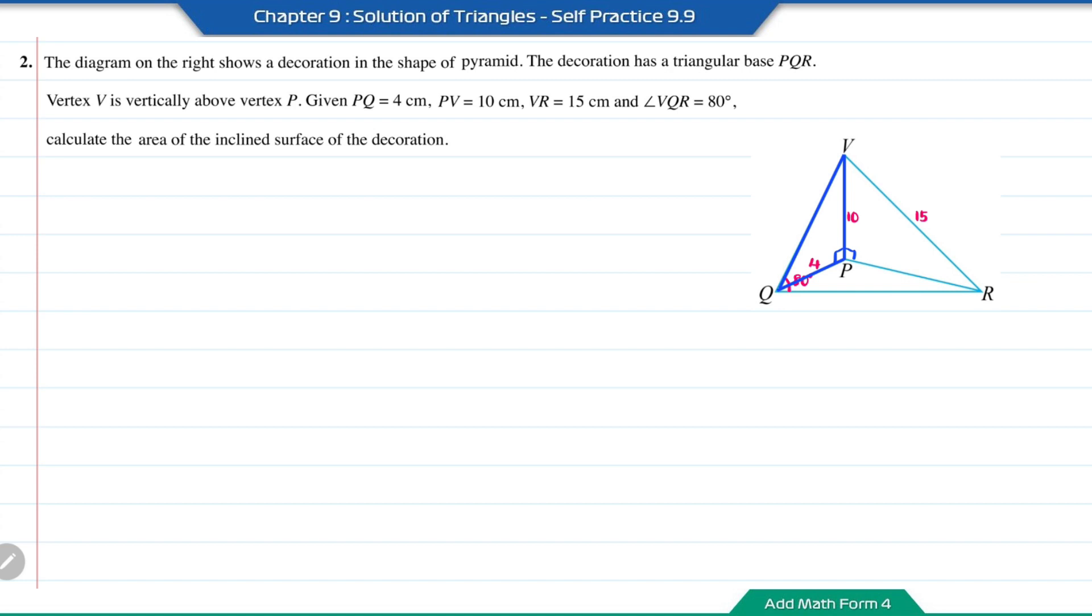As triangle VPQ is a right-angle triangle, we can find the length of VQ using the Pythagoras theorem, where VQ is the hypotenuse. VQ equals the square root of 4 squared plus 10 squared. The answer is 10.77 cm.